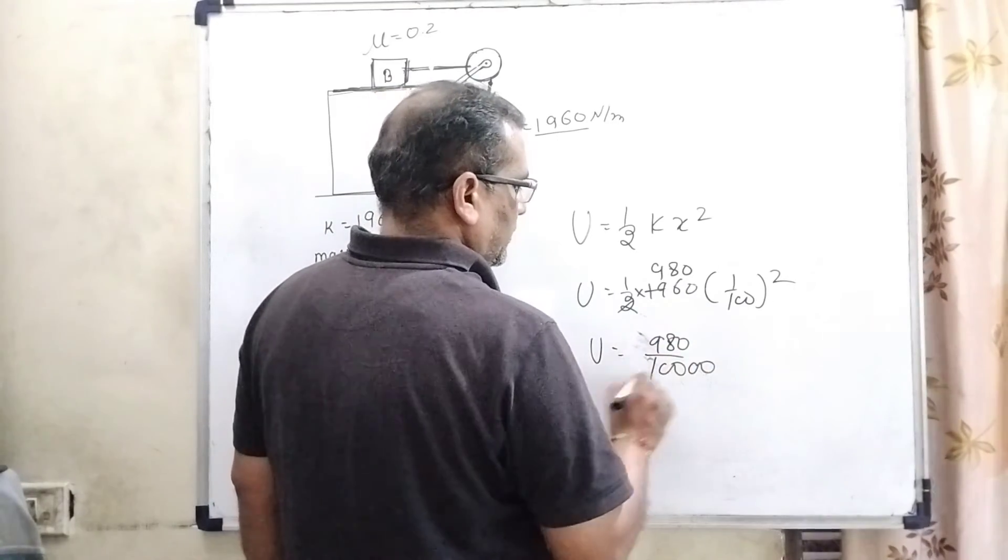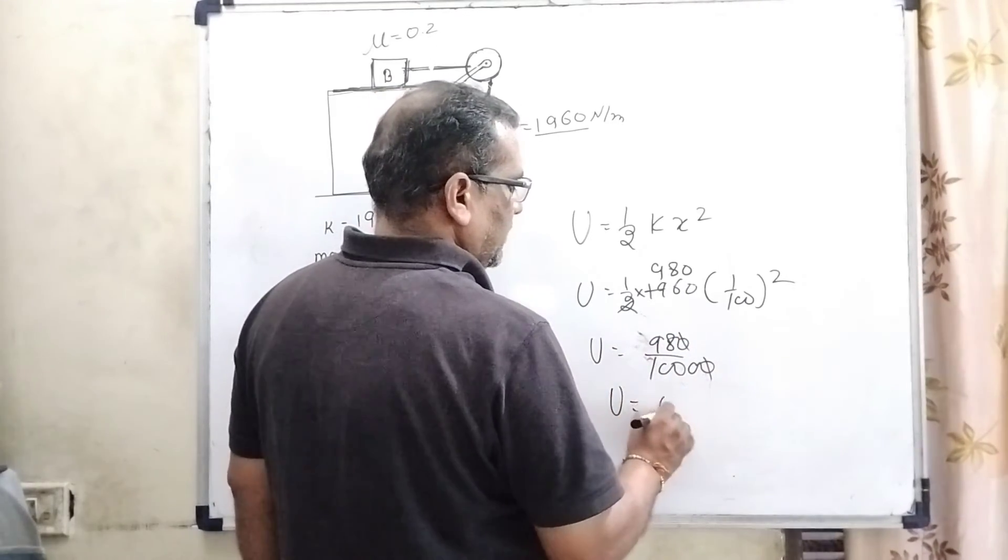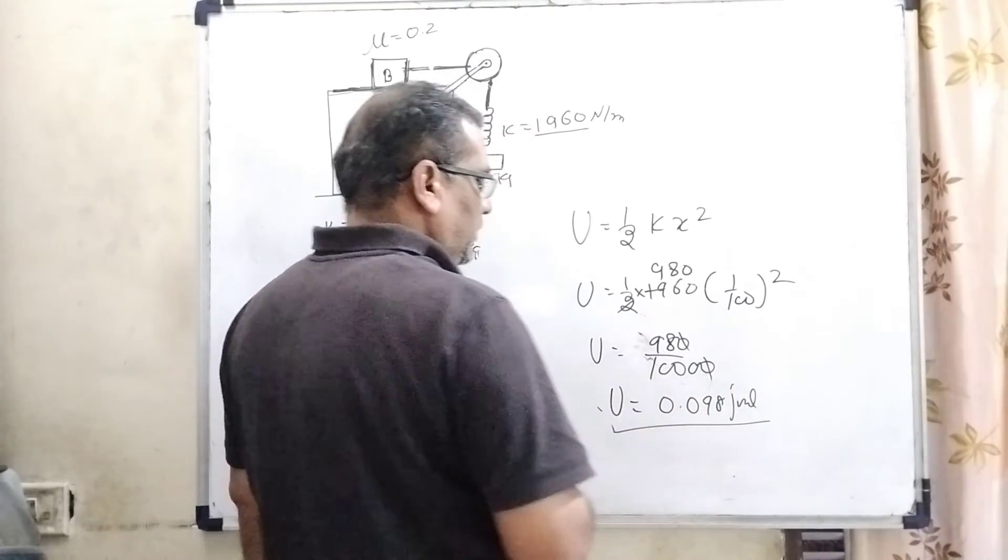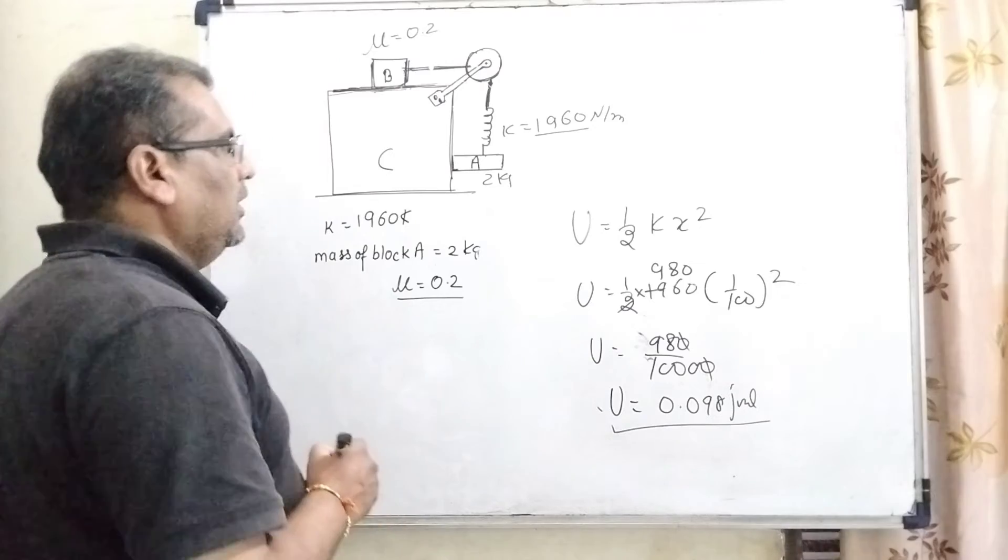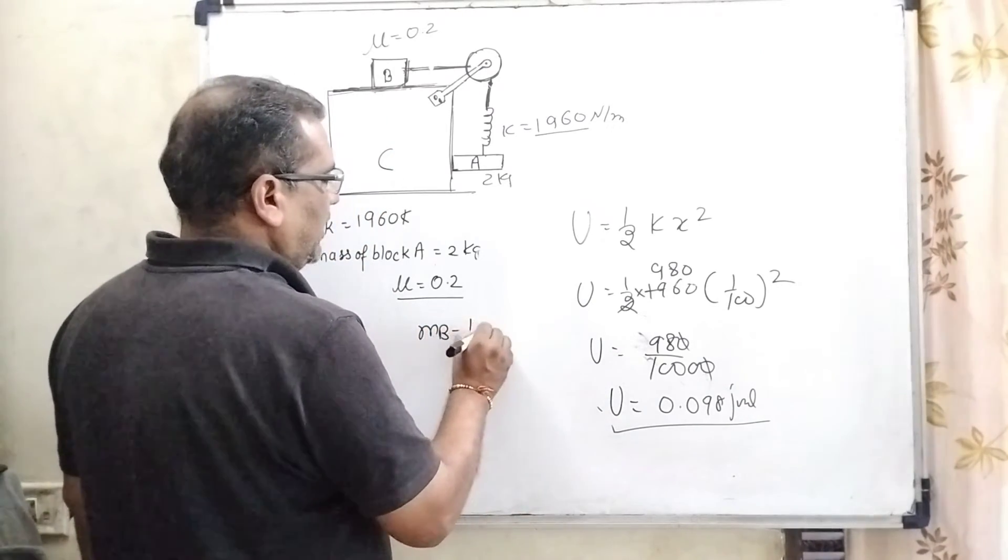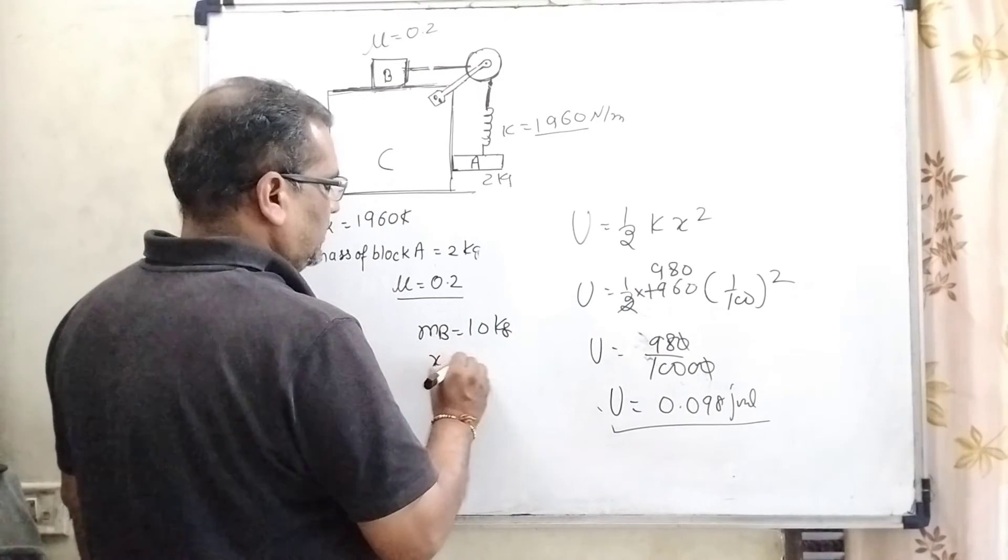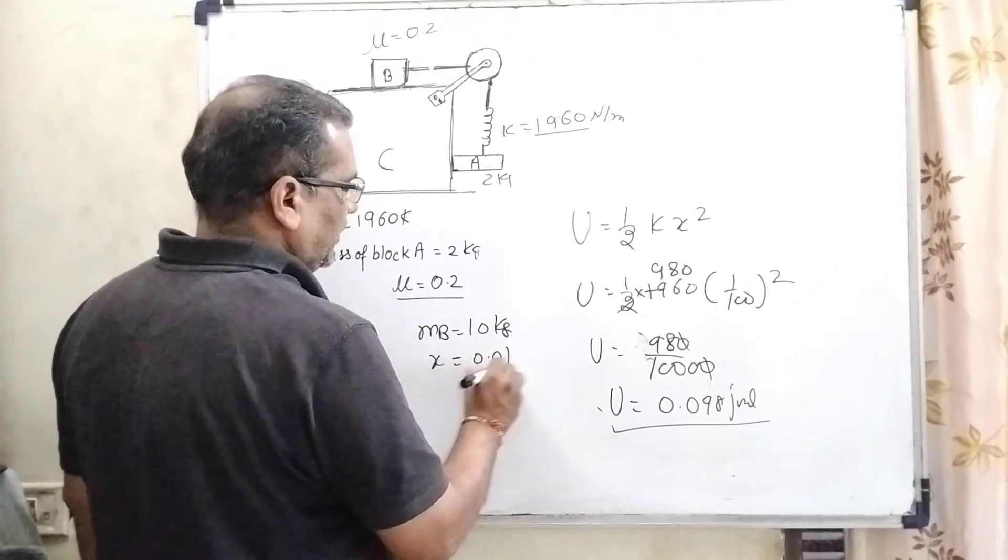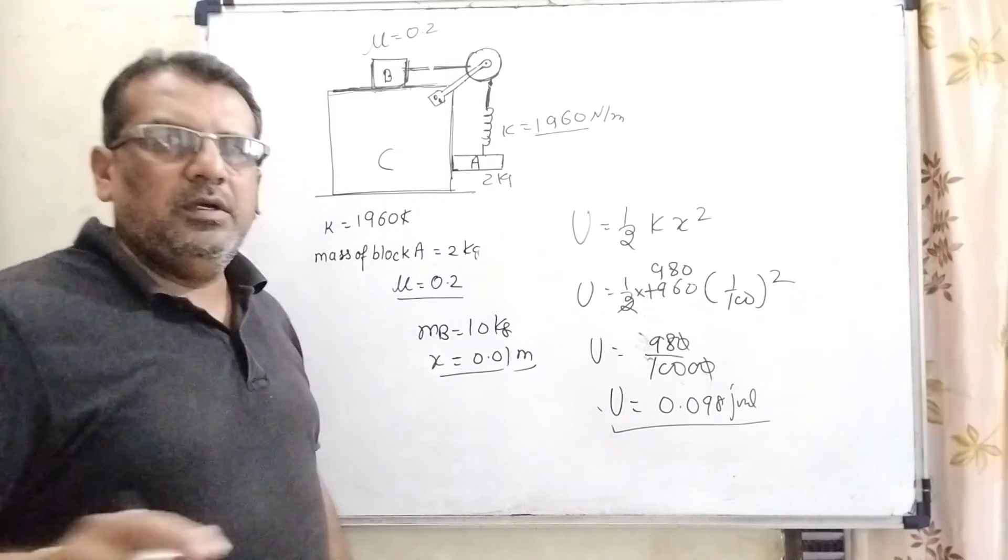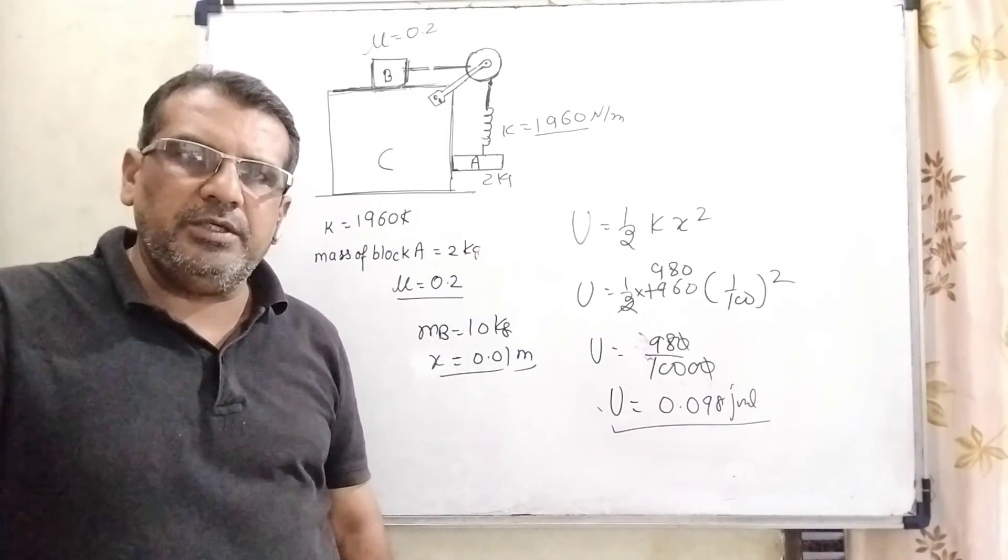And the final answer is 0.098 joules. So therefore this is the energy stored in the system, and mass of block B is 10 kilograms. These are the values we have to find out. I hope you understood this question.